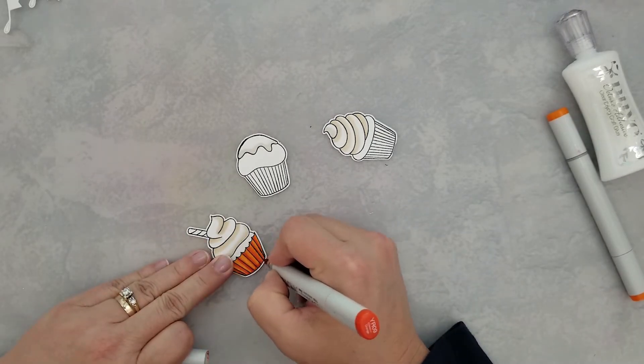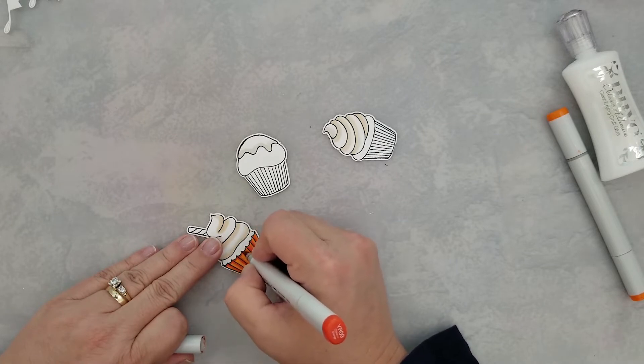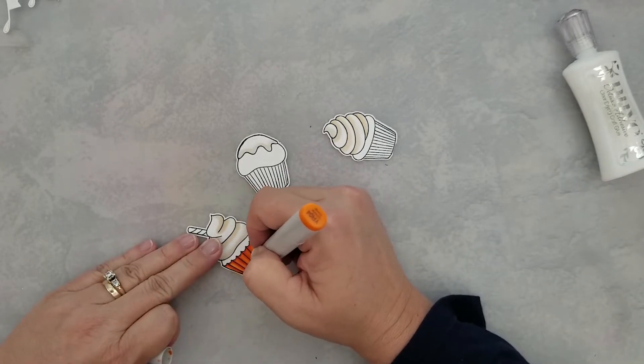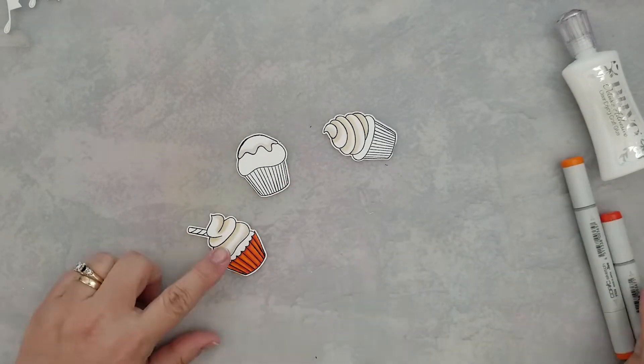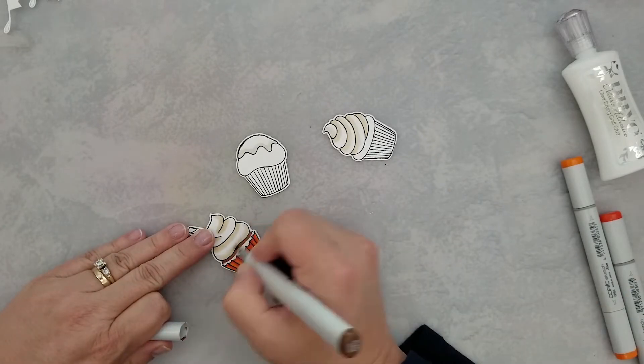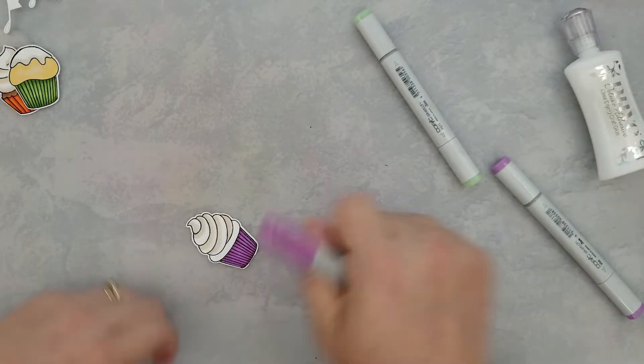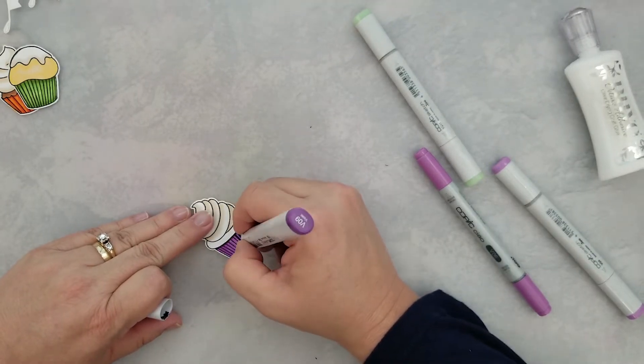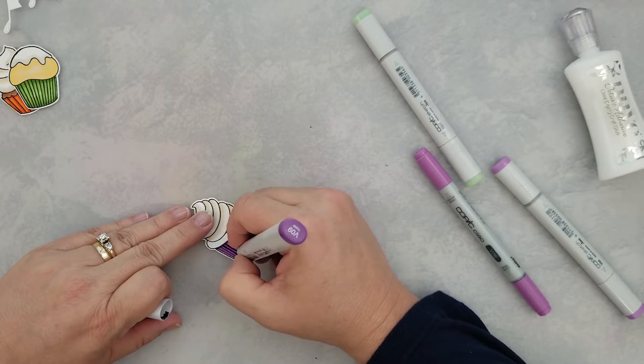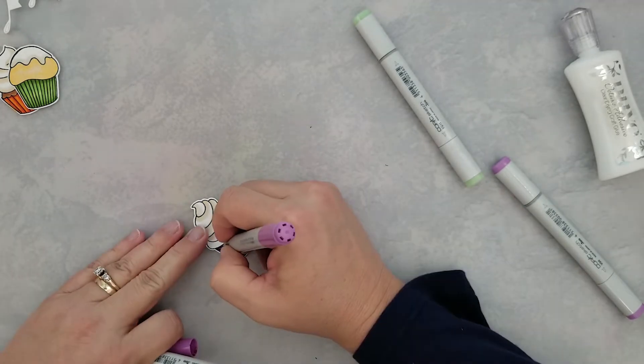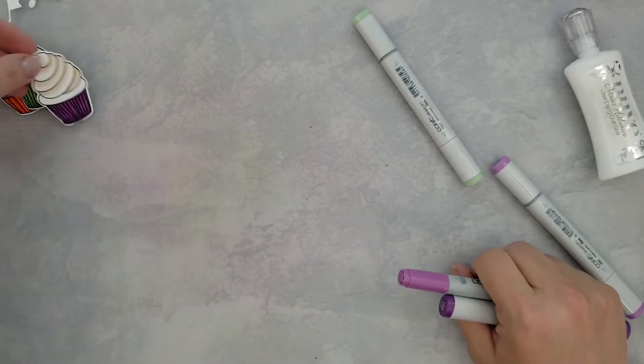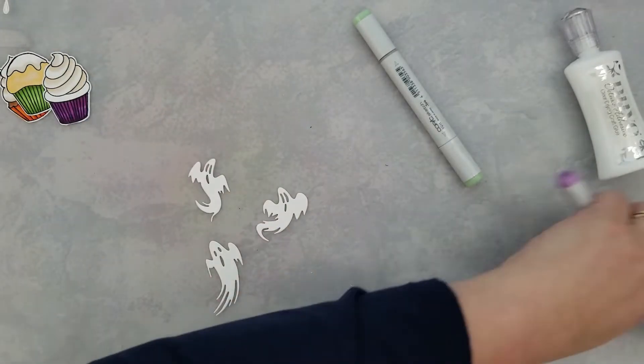As I was saying earlier, Whimsy Stamps is the innovator of slimline dies and we're celebrating their achievement during this video hop. They're so generously giving away a twenty-five dollar gift certificate to one lucky subscriber, so be sure to hop along and leave a comment along the way for a chance to win. You can find the next stop listed in the description box below. Also be sure to join us for the Instagram slimline die hop that's starting today as well, and you'll find all the details over on Instagram for that.